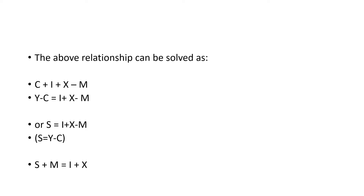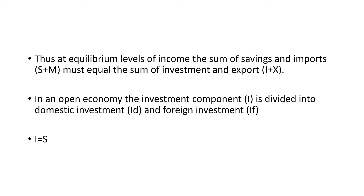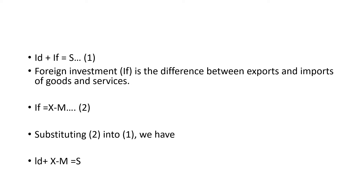From the identity, we can derive that S + M = I + X. So at equilibrium levels of income, the sum of savings and imports, indicated by S + M, must equal the sum of investment and exports, I + X. In an open economy, the investment component I is divided into domestic investment ID and foreign investment IF, where IF equals the difference between exports and imports, that is IF = X − M. Substituting into the equation gives ID + X − M = S.